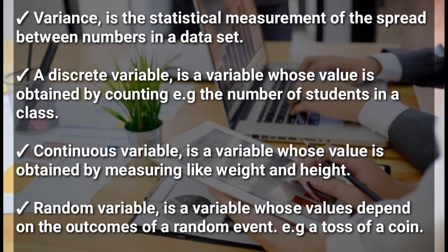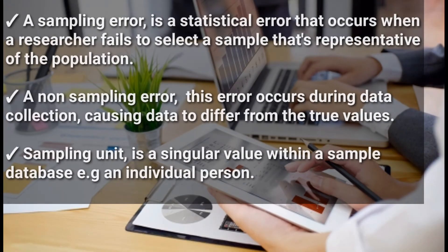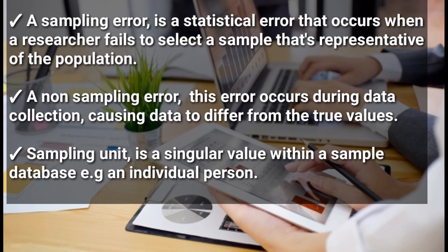A random variable is a variable whose values depend on the outcomes of a random event. For example, a toss of a coin is just random and you get the outcome — that is what we call a random variable.